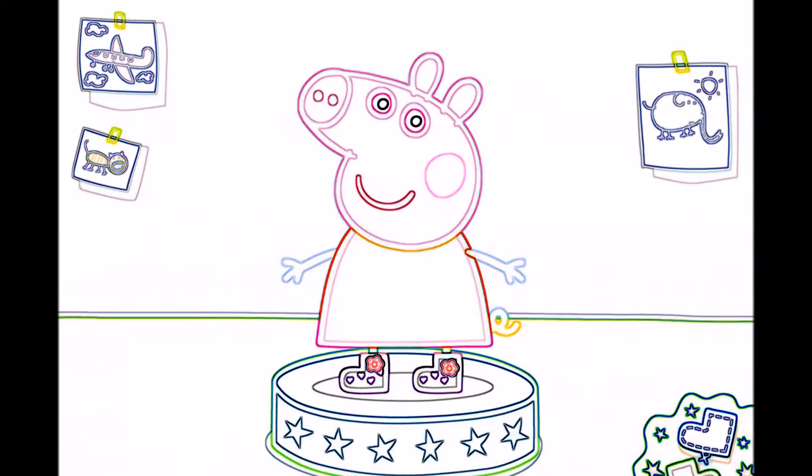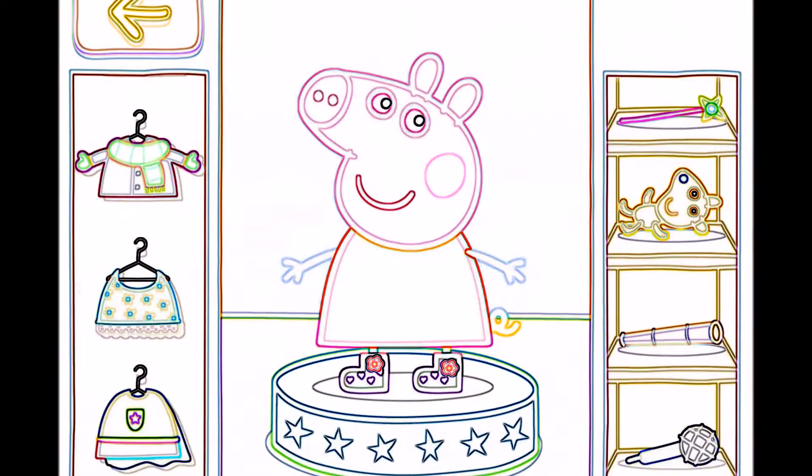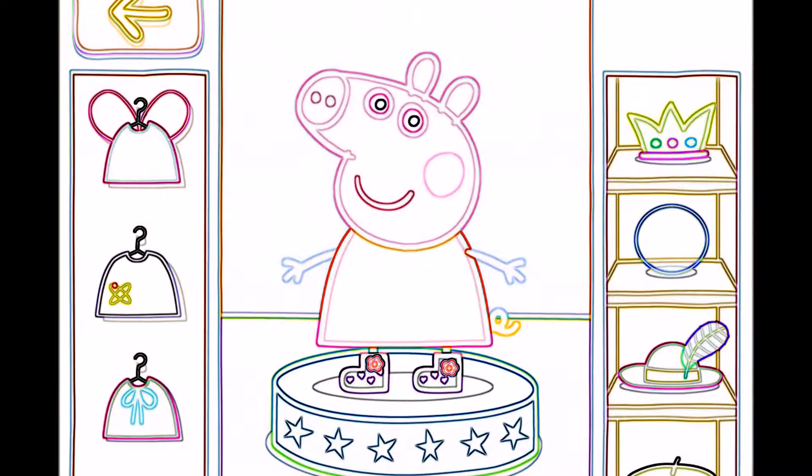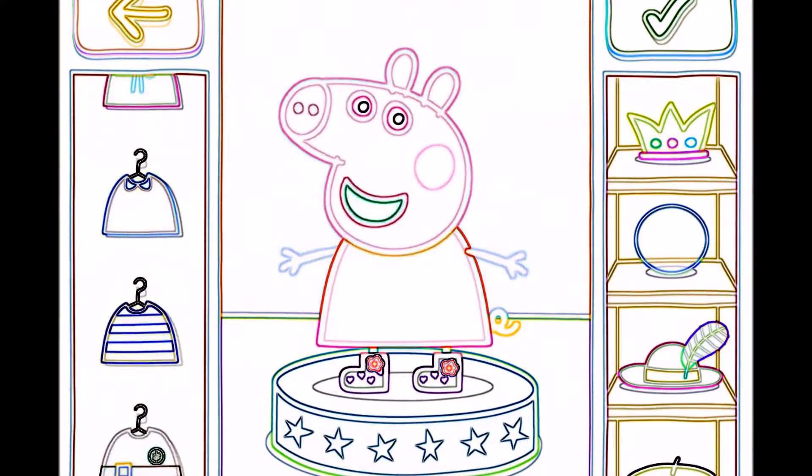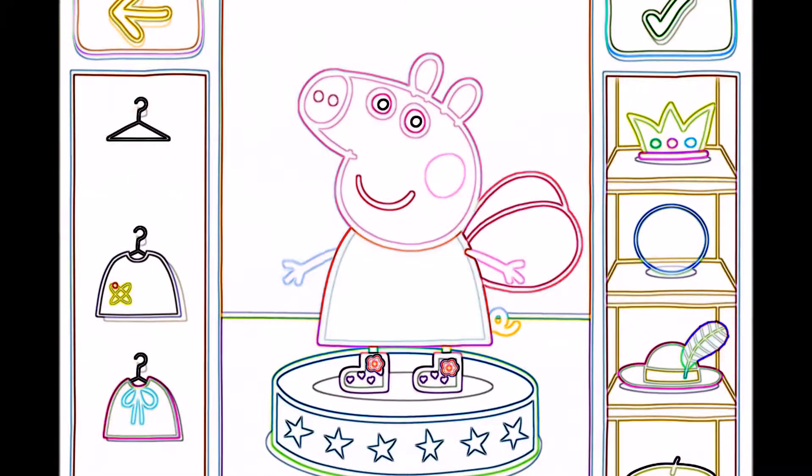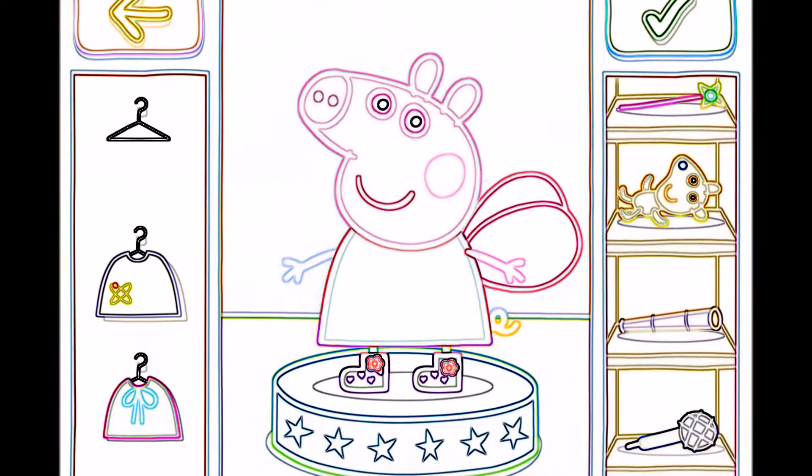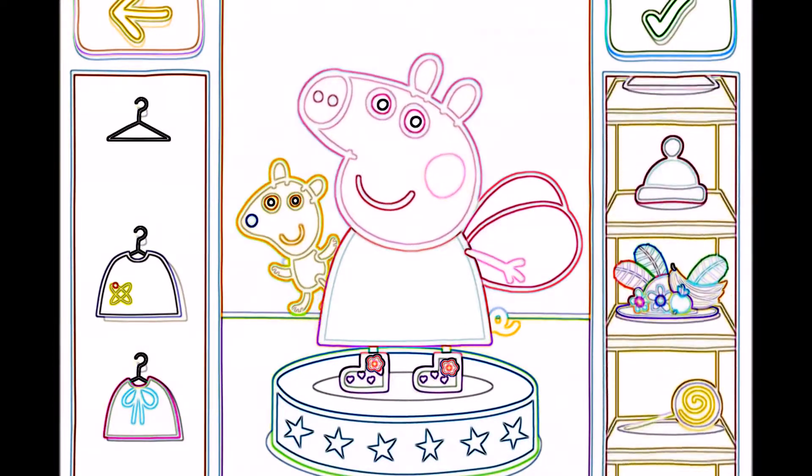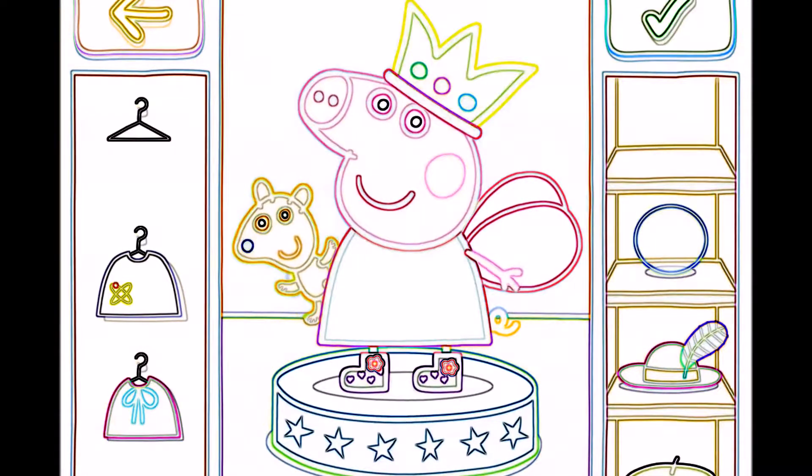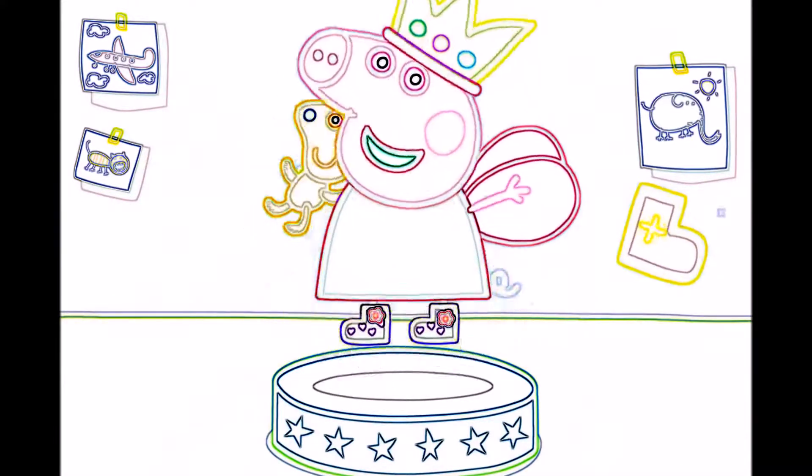Well done. You have one golden boot. Now it is time to dress Peppa in her lovely outfit. When Peppa is ready to go, press the green dutch button.